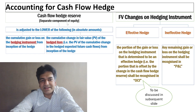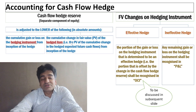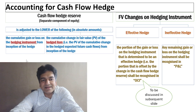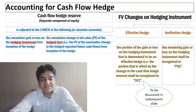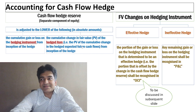Cash flow hedge reserve is a separate component of equity and is the lower of the following two: first, the cumulative gain or loss on the hedging instrument from inception of the hedge; second, the cumulative change in fair value of the hedged item from inception of the hedge. For example, if the cumulative change in fair value of the hedged item is ₹100 and the cumulative change in the hedging instrument is ₹95, the lower of the two — ₹95 — will be the cash flow hedge reserve. The cumulative change in fair value of the hedged item represents the present value of the cumulative change in expected future cash flows, discounted at an appropriate discount rate.